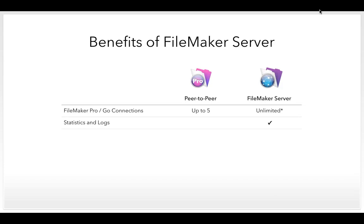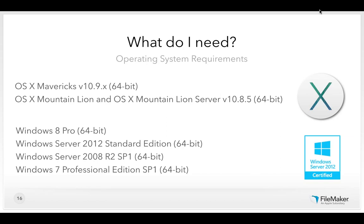Comparing directly with peer-to-peer: peer-to-peer is limited to five users; FileMaker Server is essentially unlimited. FileMaker Server also provides statistics and logs, secure network traffic, easy automated backups, and FileMaker WebDirect for browser access. For system requirements, you'll need a computer to install FileMaker Server on. We support both macOS and Windows environments. On the Windows side, all supported operating systems are 64-bit, because FileMaker Server is a 64-bit environment that can take advantage of a lot of RAM. We highly recommend installing on a server-grade operating system for maximum robustness and reliability.